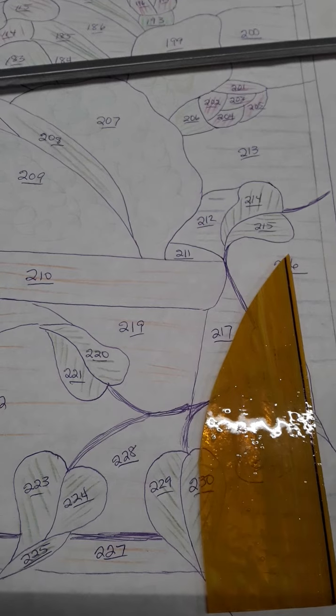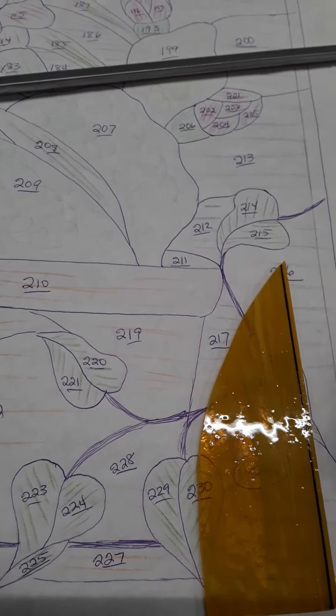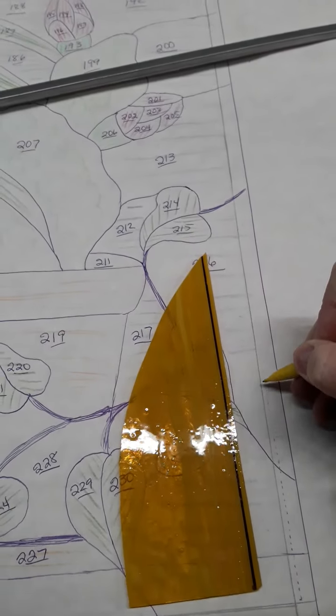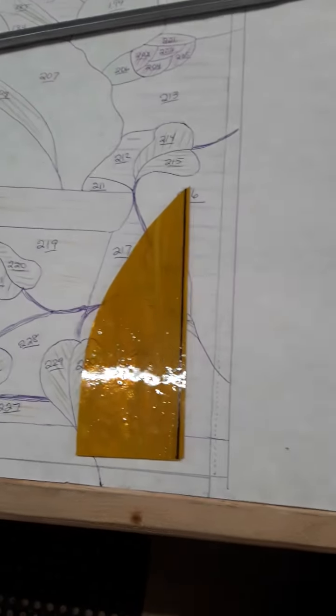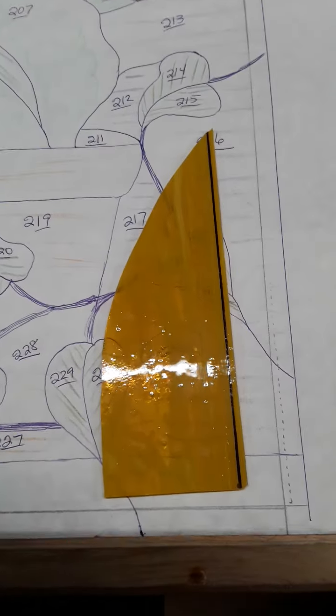But just draw a dotted line all the way around. That's the size that you need extra to cut your glass so that it fits in the zinc.